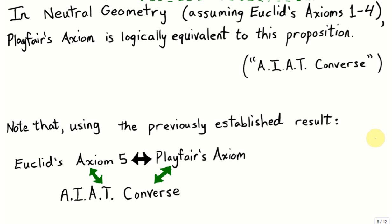So in this video, we're going to actually prove two things. We'll prove that, assuming Playfair's axiom or assuming Euclid's 5th axiom, we can prove this proposition, which we'll refer to as the AIAT converse for short. Also note, as an added bonus, we previously proved that Euclid's axiom 5 was logically equivalent to Playfair's axiom. If we show that the AIAT converse is equivalent to Playfair's axiom, by transitivity we'll also have a bonus result for free that the AIAT converse is equivalent to Euclid's 5th axiom.